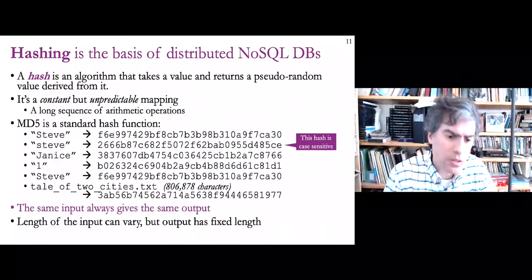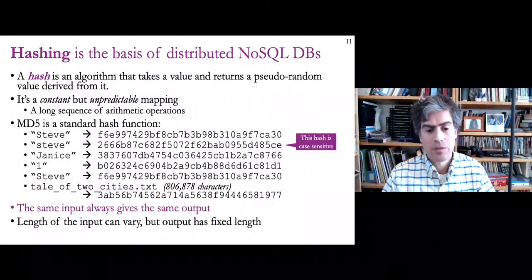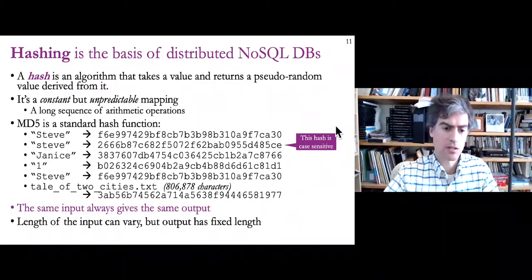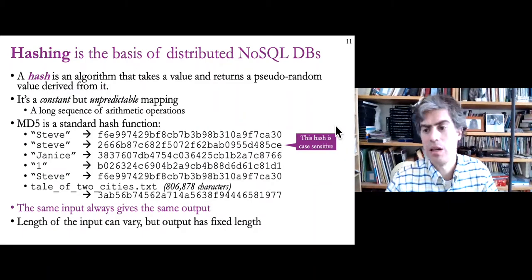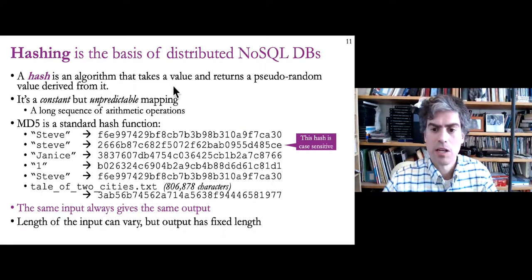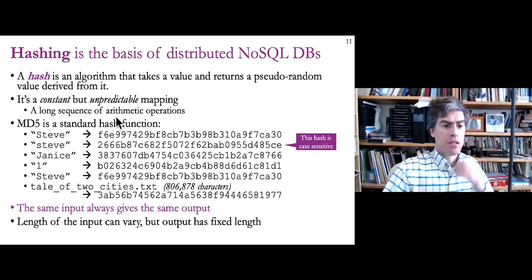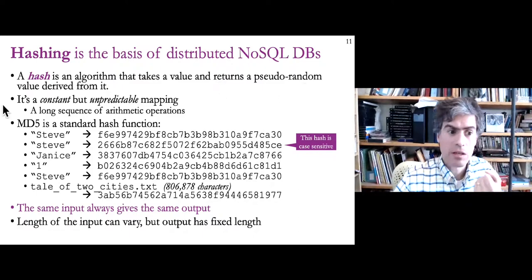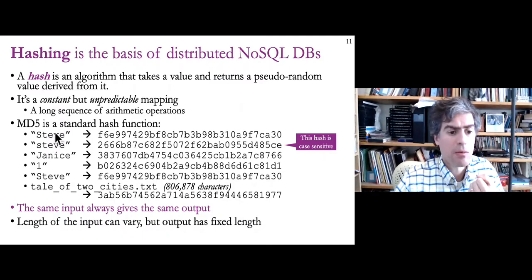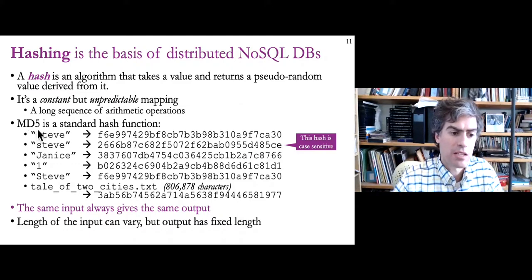These NoSQL databases are key-value stores and they use hashing for data partitioning. A hash is an algorithm that takes a value and translates it into a pseudo-random value derived from it. It's not truly random — it's deterministic, so it'll always produce the same output for a given input, but it's kind of unpredictable based on looking at the input. Examples of hash functions are MD5 and SHA-1.